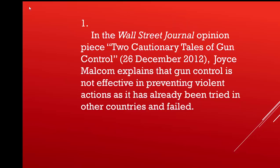This is the first sentence from an article you've read, 'Two Cautionary Tales of Gun Control' by Joyce Malcolm. Notice how everything is placed in one sentence but still contains all the major information. 'In the Wall Street Journal opinion piece' — opinion piece is the genre, Wall Street Journal is the publisher — 'Two Cautionary Tales of Gun Control,' the date of publication in MLA format: date, month, year. Then 'Joyce Malcolm explains' — that's the rhetorically accurate verb — 'that gun control is not effective in preventing violent actions as it has already been tried in other countries and failed.' Take a moment to write this sentence down.